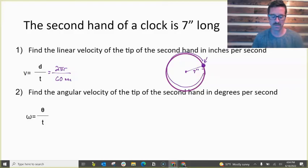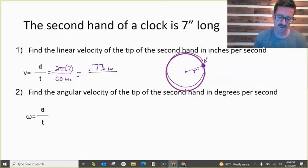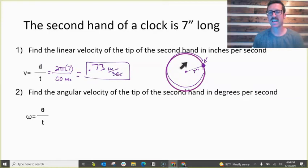And our circumference is given by 2πr. So if I punch this into my calculator and do 2 times π times 7 divided by 60, that's going to be 0.73, roughly 0.73 inches per second. In every second, the tip of this second hand travels about 0.73 inches around the circle.